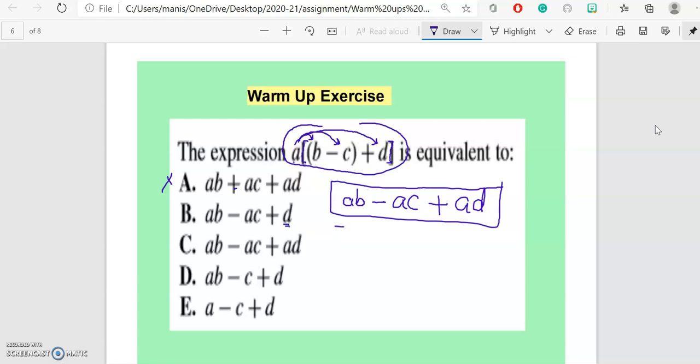Okay, so let's look at option C: ab - ac + ad. So as we all can see, option C is the same as the answer which we got over here, so option C is the correct answer for this question.